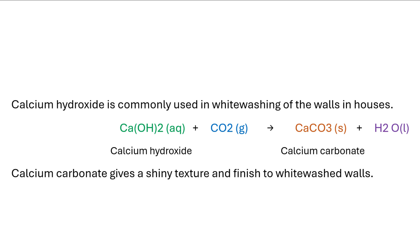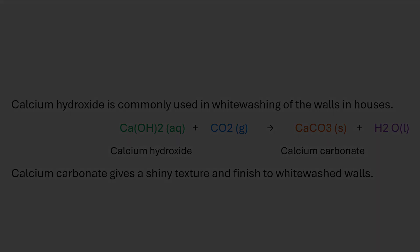Calcium hydroxide in turn reacts with the carbon dioxide present in atmospheric air to produce calcium carbonate, which is the chemical name for construction materials such as limestone and marble. The reaction can be represented as shown here. Calcium carbonate gives that shiny texture and finish to whitewashed walls.